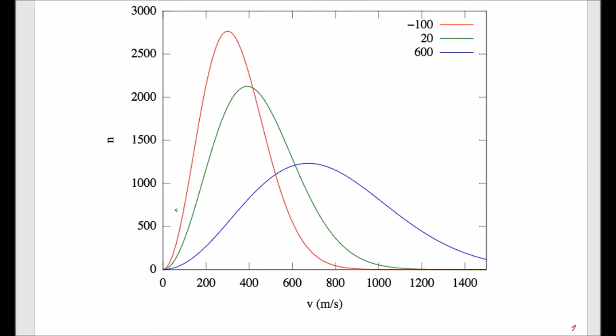If we look at the red curve here, you can see that at this threshold velocity of a thousand meters per second, there's essentially zero molecules in the red curve that would have this energy. And therefore, the evaporation rate at minus 100 degrees C would be almost no evaporation.